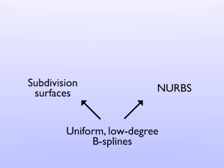Previously, subdivision schemes and NURBS have generalised uniform low degree B-splines in different ways. Subdivision surfaces can include extraordinary points, while NURBS can be non-uniform and are defined for arbitrary degree.